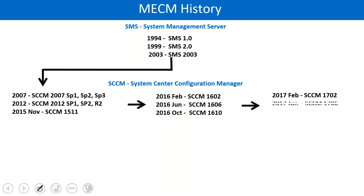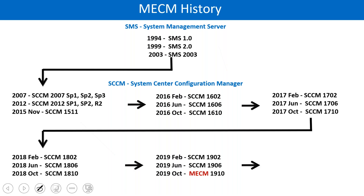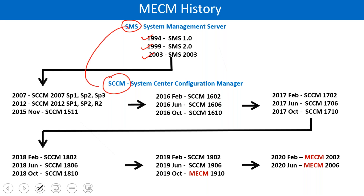Now, SCCM historical background. SCCM started as SMS — System Management Server — in the year 1994. SMS 1.0, then SMS 2.0 in 1999, then SMS 2003, then SCCM. Microsoft changed the name from SMS to SCCM. Then Microsoft released SCCM 2007, 2012, 2015, and 2011.